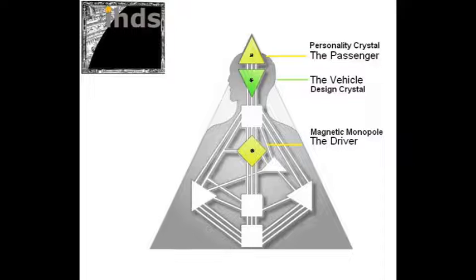What about the rest — what about the red? Who you think you are is not at all who you are; it's who you think you are. This is the personality. When we look at the design crystal, it is unique in the sense that it operates directly with the magnetic monopole. And it is the design crystal — when the neutrino stream goes through it — that generates the vehicle, the form itself.